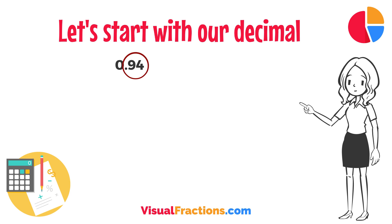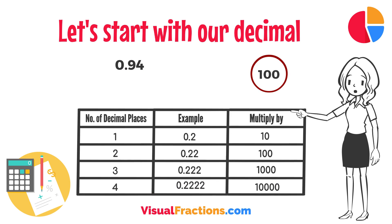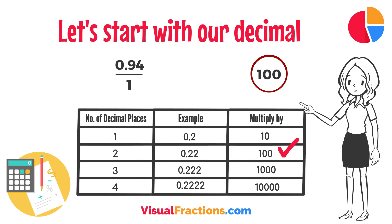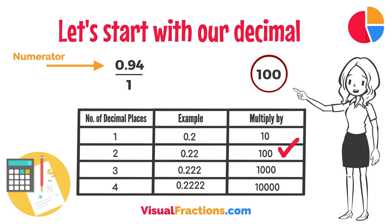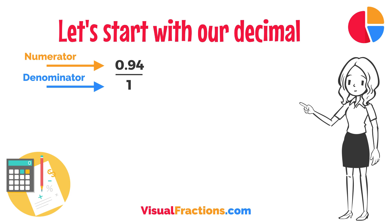Notice there are two digits to the right of the decimal. This places it in the hundredths position. To convert this decimal into a fraction, you initially put it over 1, essentially treating the decimal as the numerator in a fraction where the denominator is 1.